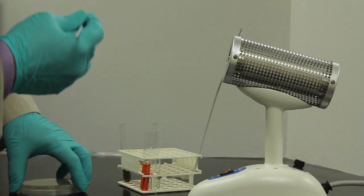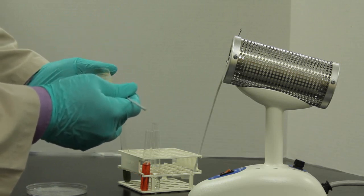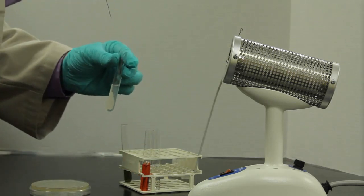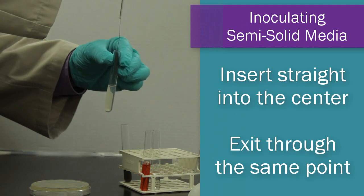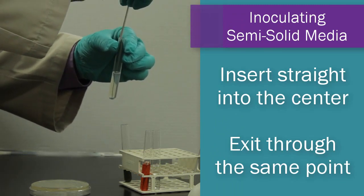So let's do this for the semi-solid. For the semi-solid, again, once it's cooled for 15 to 20 seconds, pick up an individual colony. With your semi-solid media tube, you're going to inoculate straight up and down through the center of your media. Go all the way to the base.